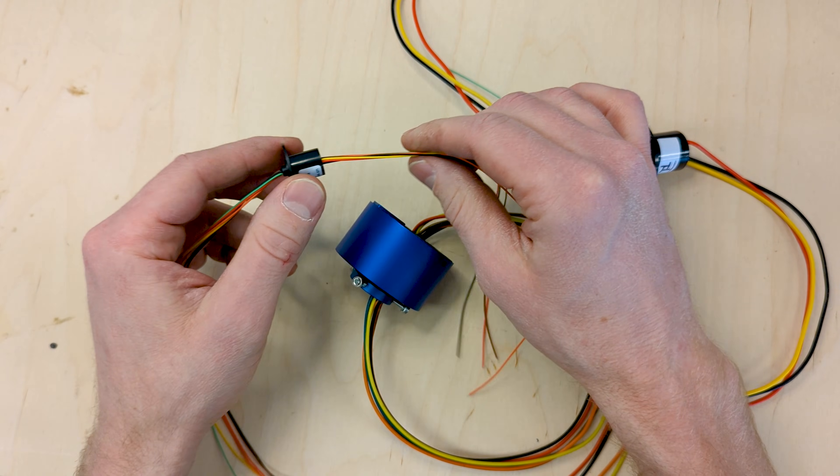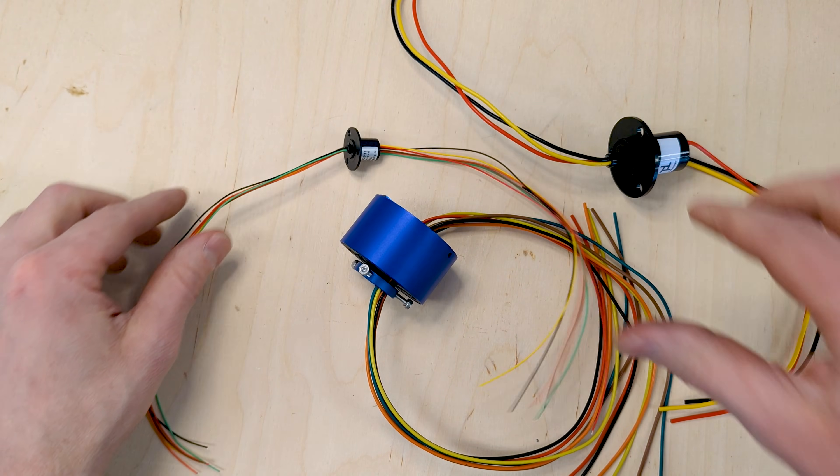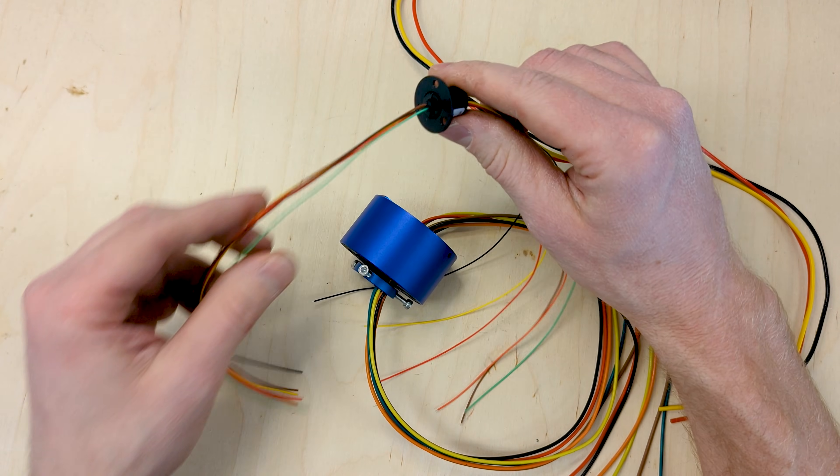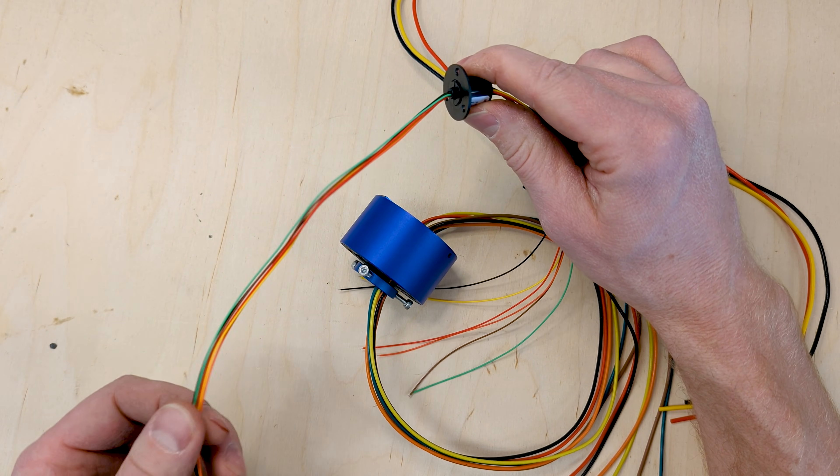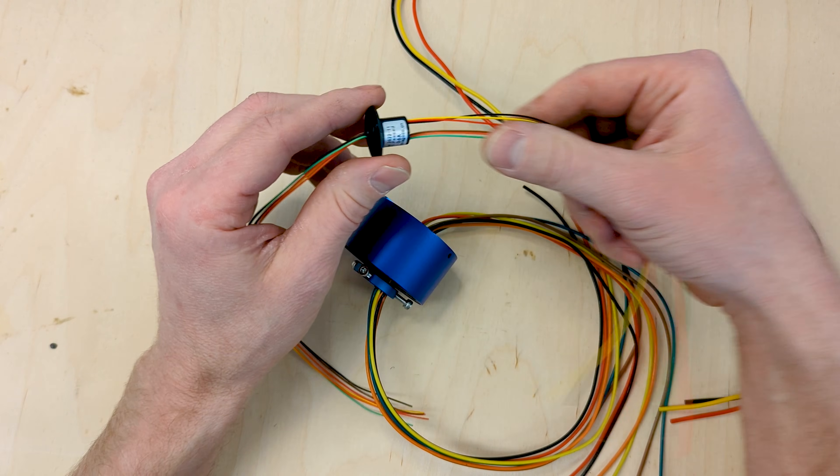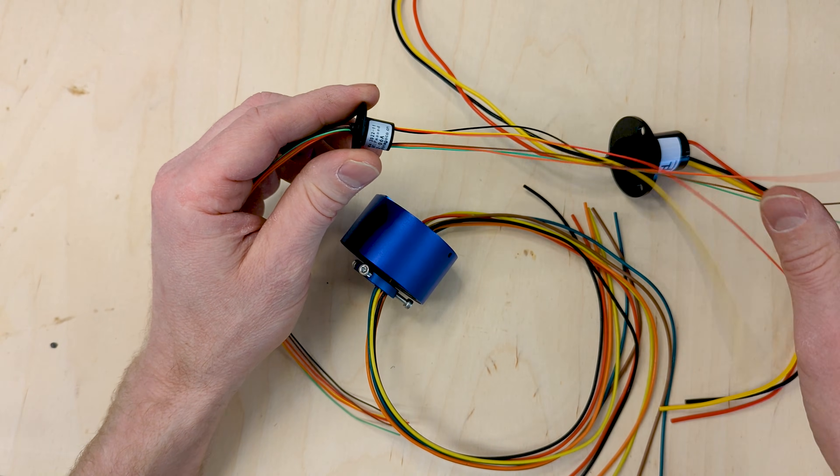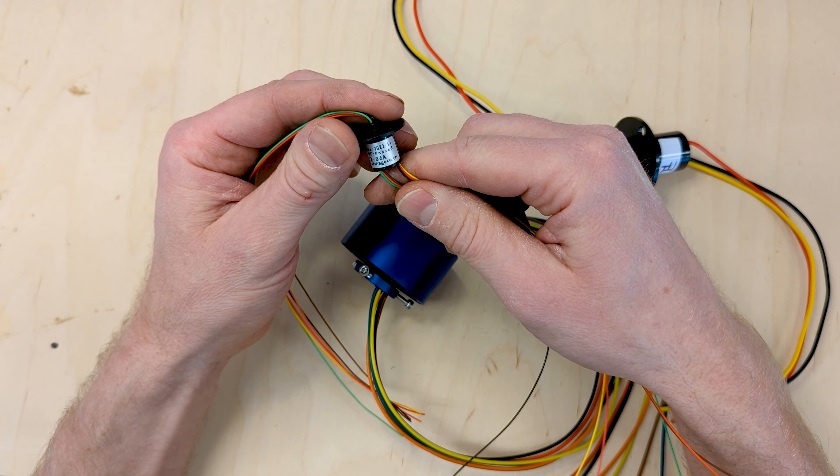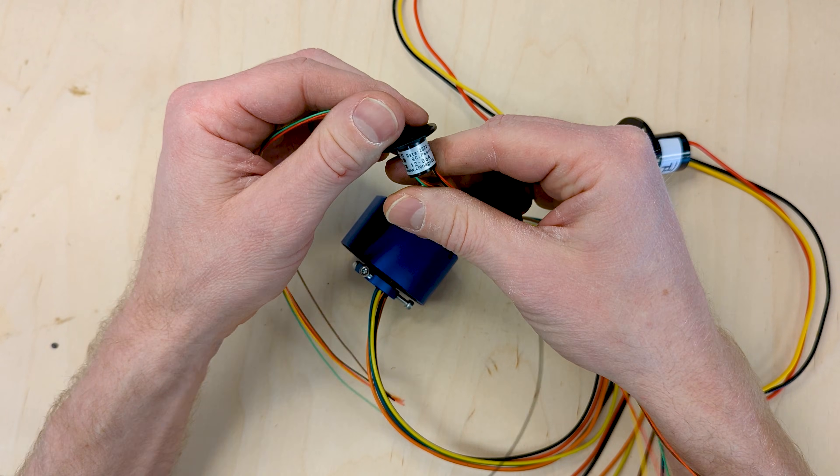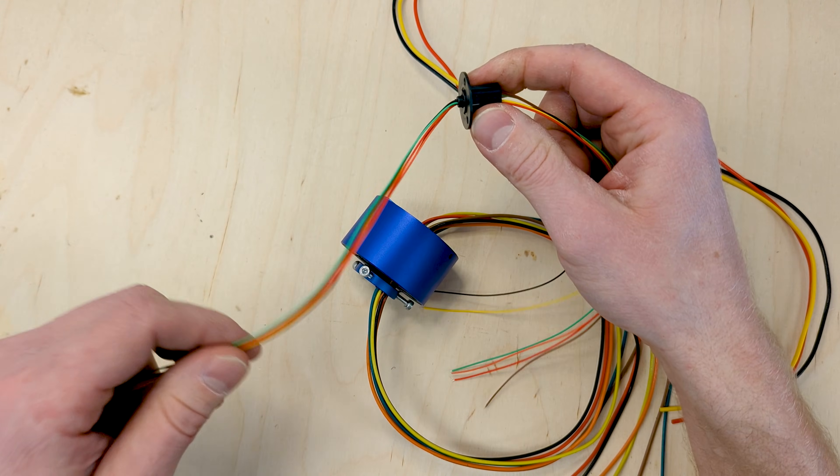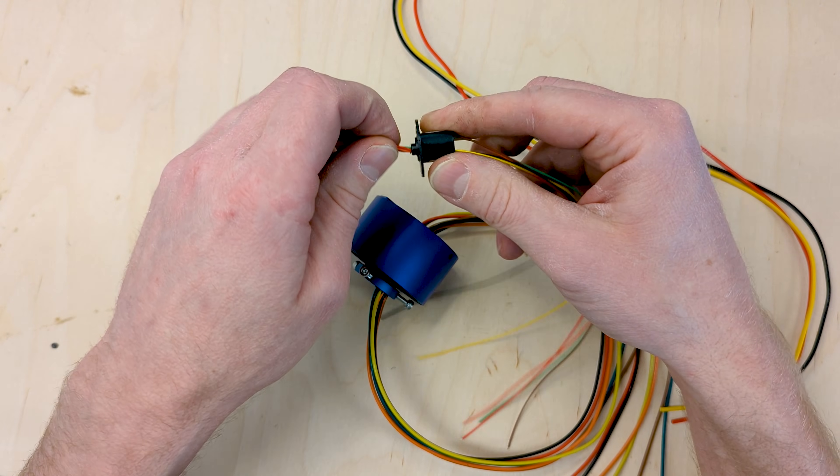These can be used for the transfer of signal and power. For a smaller gauge wire slip ring like this, it's better for the transfer of signals because it can't handle a lot of amps. This is rated at 0.6 amps, so it can't handle a lot of current.